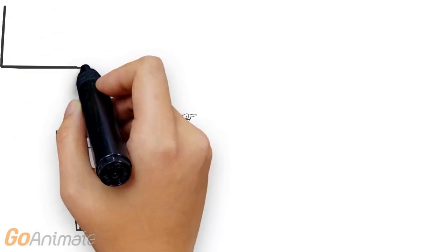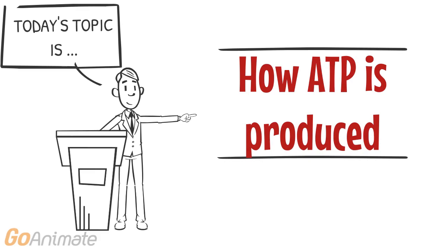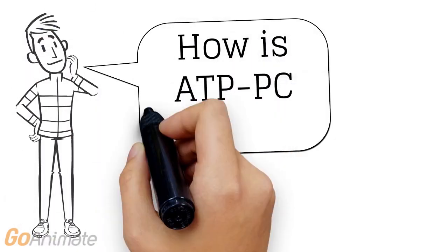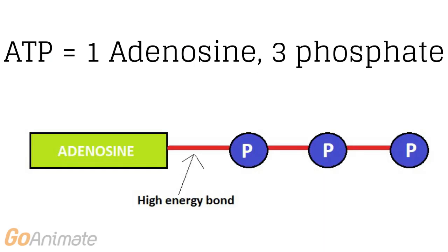Today in this video we will be exploring how ATP-PC is produced within the body. We have already learned about ATP-PC and its role in movement, but how is it produced? ATP consists of one molecule of adenosine and three molecules of phosphate, therefore it is called adenosine triphosphate. The adenosine and phosphate molecules are connected by a high energy bond.